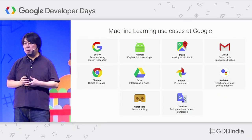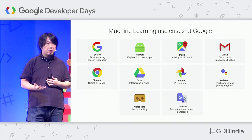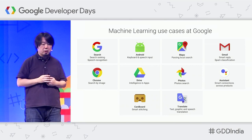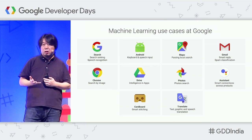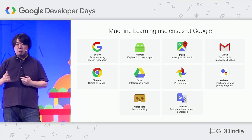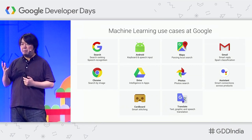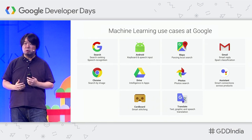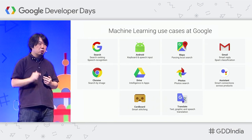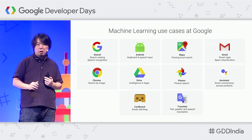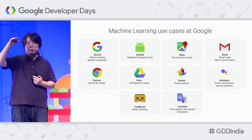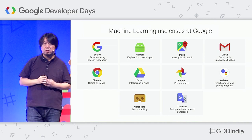Google has been using these technologies for implementing over 100 production services and projects, including Google Search, Android, Maps, and Gmail. If you're using Google Search every day, you're already using deep learning from Google, because in 2015 we introduced RankBrain — an algorithm based on deep learning to determine the ranking of search results.